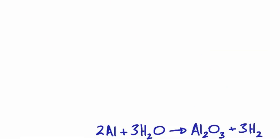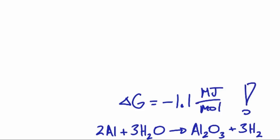The reason that aluminum corrodes is because when aluminum reacts with water, there is a huge amount of energy that is released. The delta G for this reaction is -1.1 megajoules per mole. And this is a huge amount of energy for a chemical reaction. So the question comes not why does aluminum corrode, but why does aluminum not corrode?